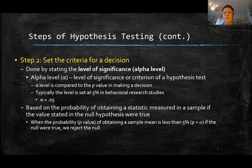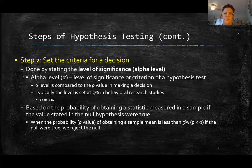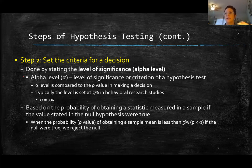An alpha level of 0.05 means we're only allowing a 5% risk that our sample mean will be significant due to a fluke or error. If it's alpha 0.01, we're only allowing a 1% risk. We use the alpha level and compare it to the P-value. We always compare P to alpha and look to see if P is less than alpha — if P is less than alpha, then our test is significant.